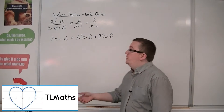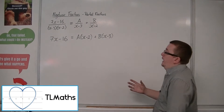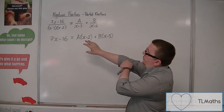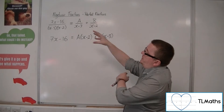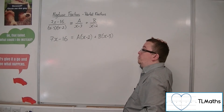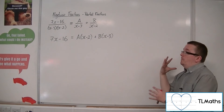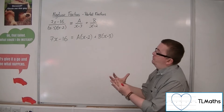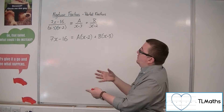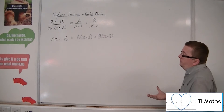In the previous video we've gotten down to writing 7x minus 16 over x minus 3 times x minus 2 as a pair of partial fractions being added together: a over x minus 3 plus b over x minus 2.